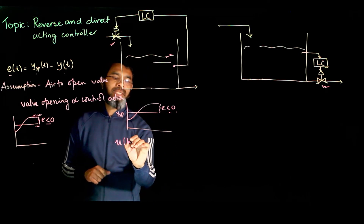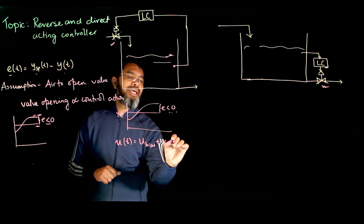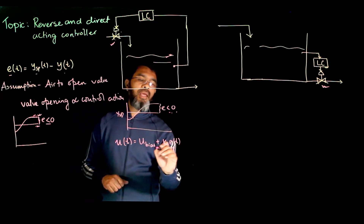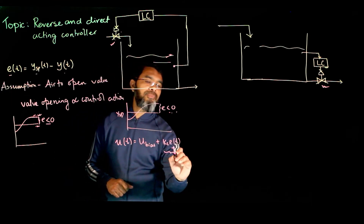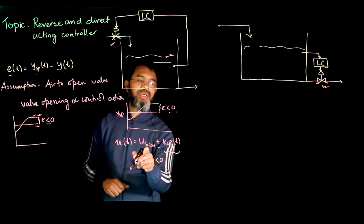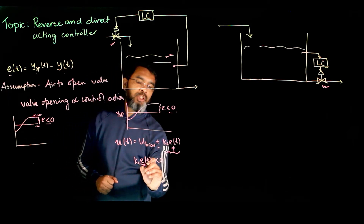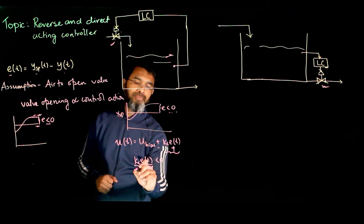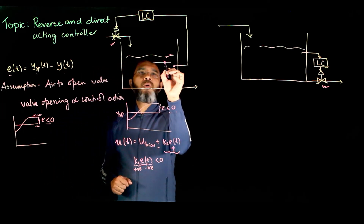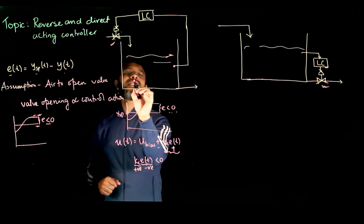Look at the equation for control action: U(t) equals U_bias plus KC times E(t). Here the error is negative, and if we need to reduce the control action, then the KC times E(t) term must be negative. Since error is negative, KC must be positive. This is what is called reverse acting — when the output exceeds the set point, you reduce the control action. So reverse acting means KC greater than zero.